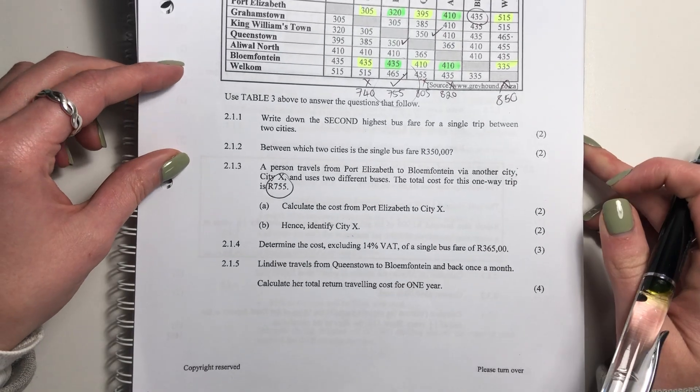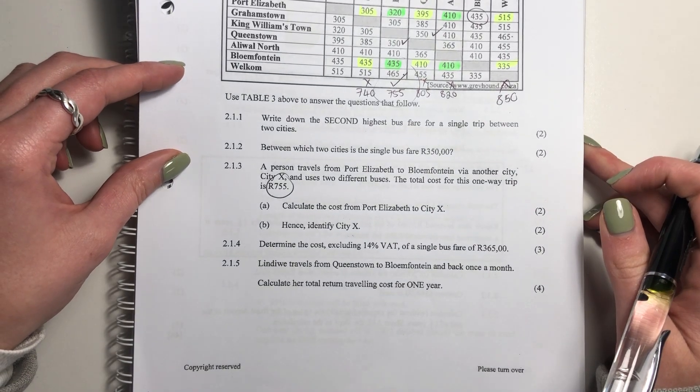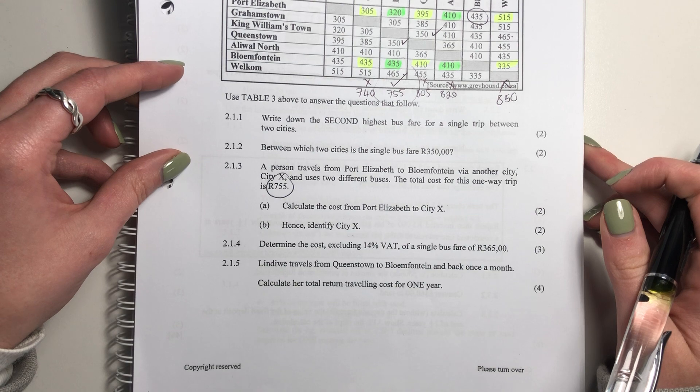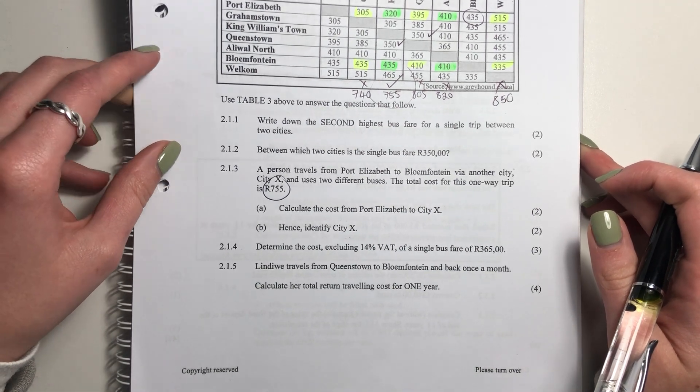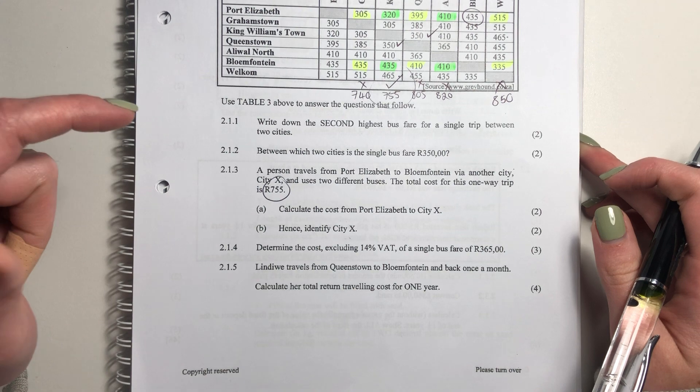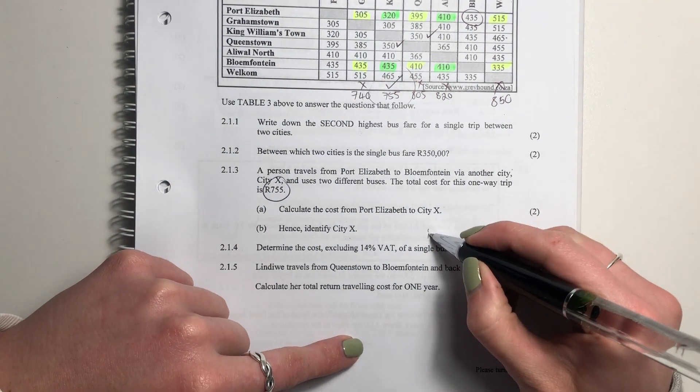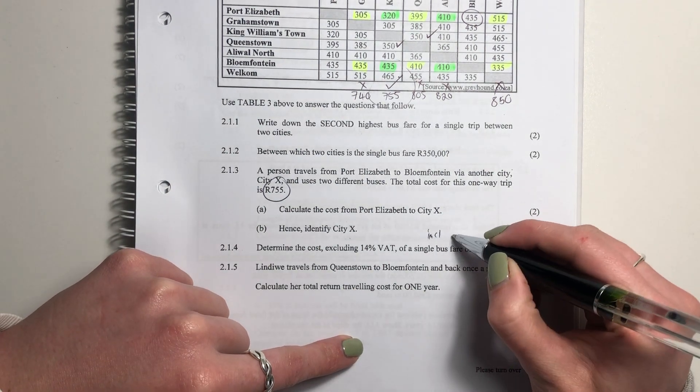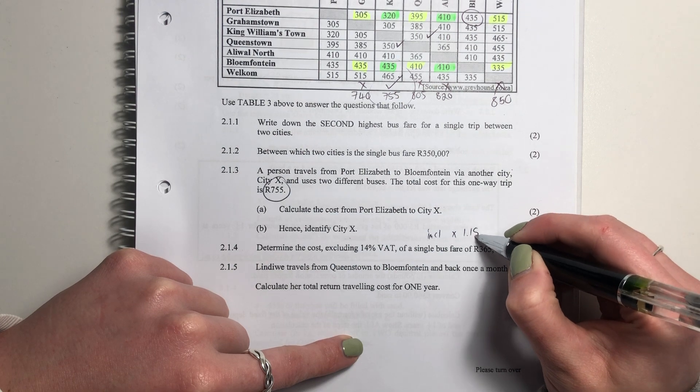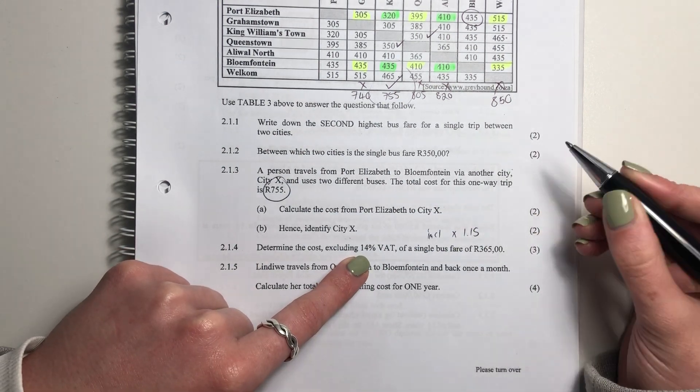It then says, determine the cost, excluding 14% VAT, of a single bus fare of 365 rand. Now, please remember when you're including and excluding VAT, there's different operations. When you're including, you times by 1.15 in our case. In this case, it's 14 because it's outdated.